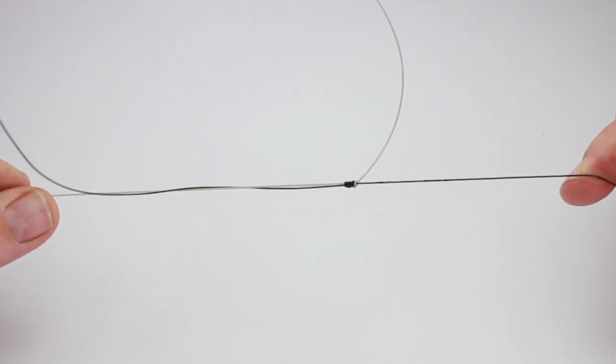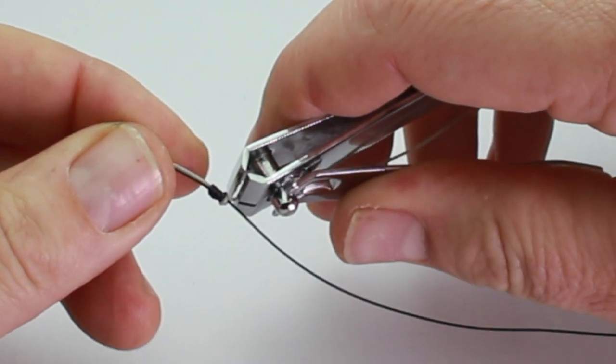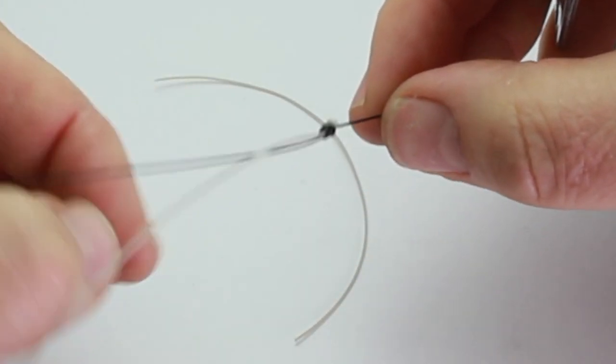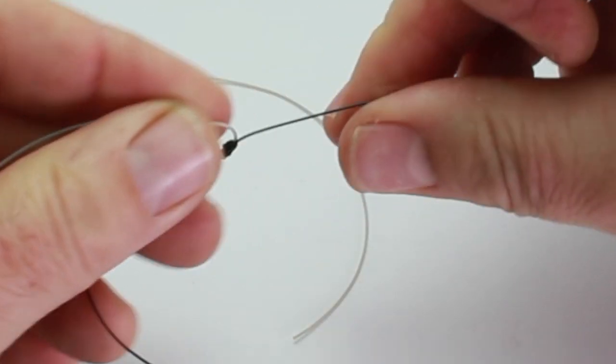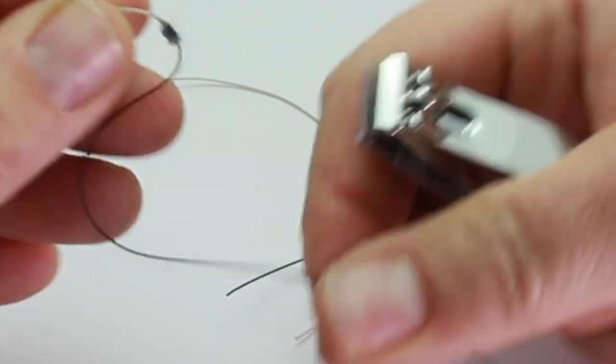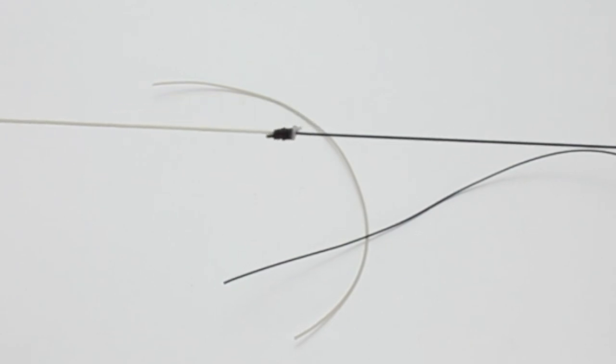You want to clip the ends off—don't want to go too close but you don't want lots of tails hanging off either. There you go, a simple, easy leader knot.